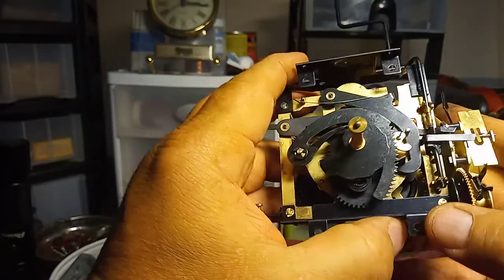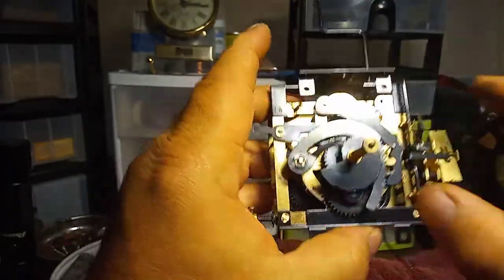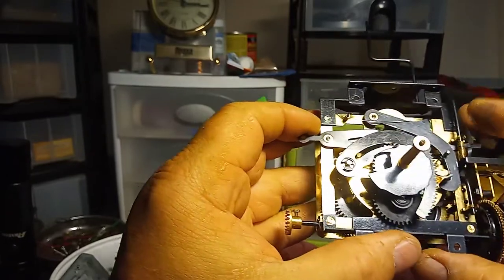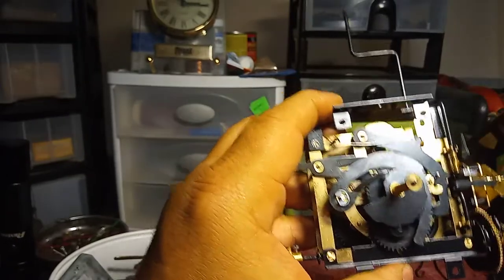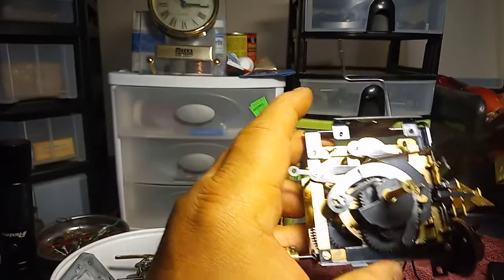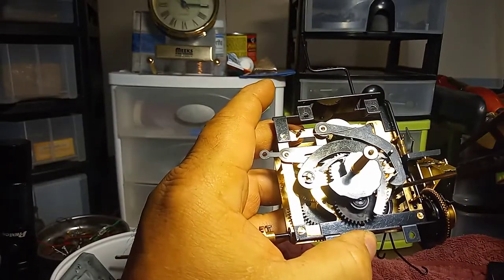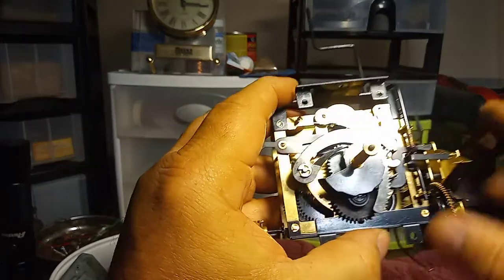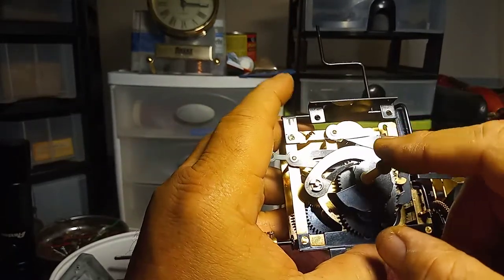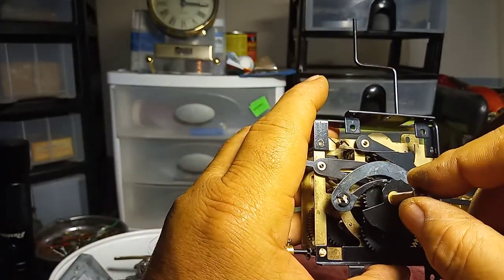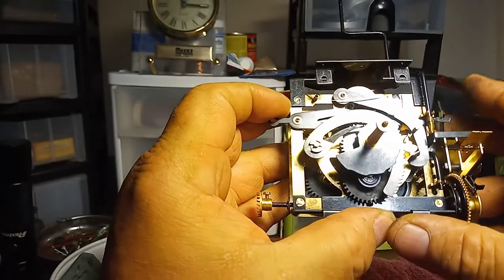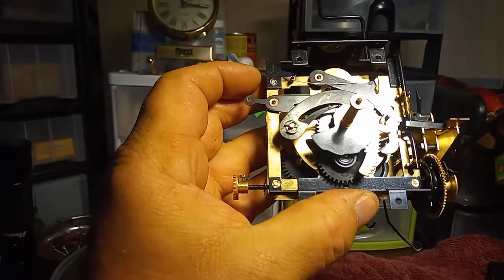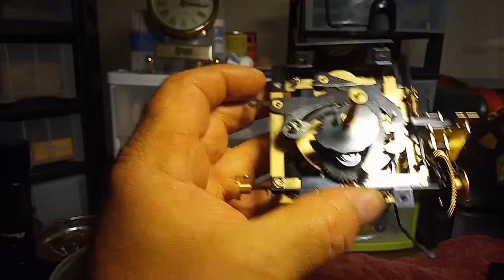First of all, the lift lock lever lifts the rack stop lever. This being the lift lock lever, this being the rack stop lever. What I'm moving right now, when the lift lock lever is moved on the hour by the minute wheel with minute arbor, it lifts this section right here.